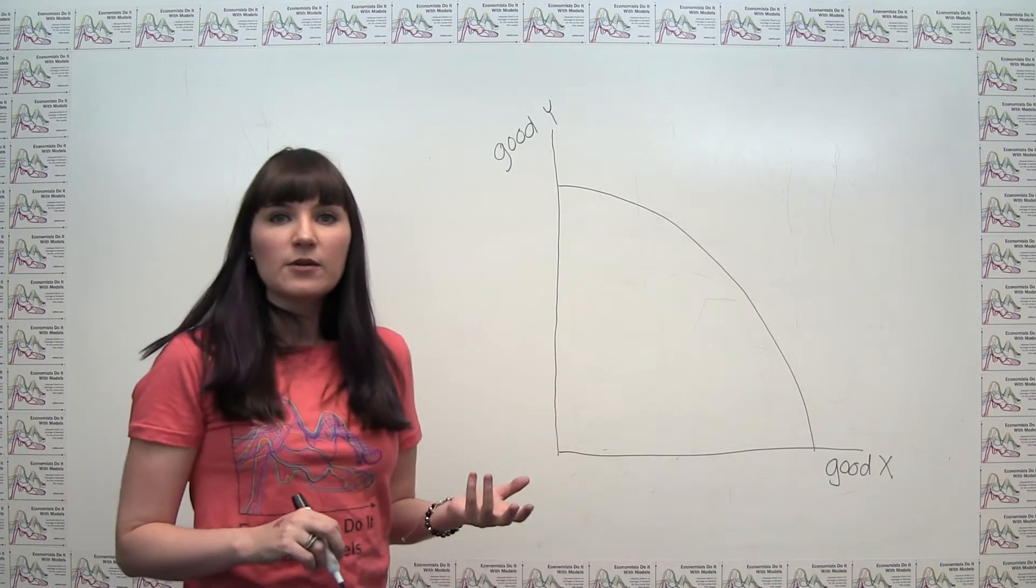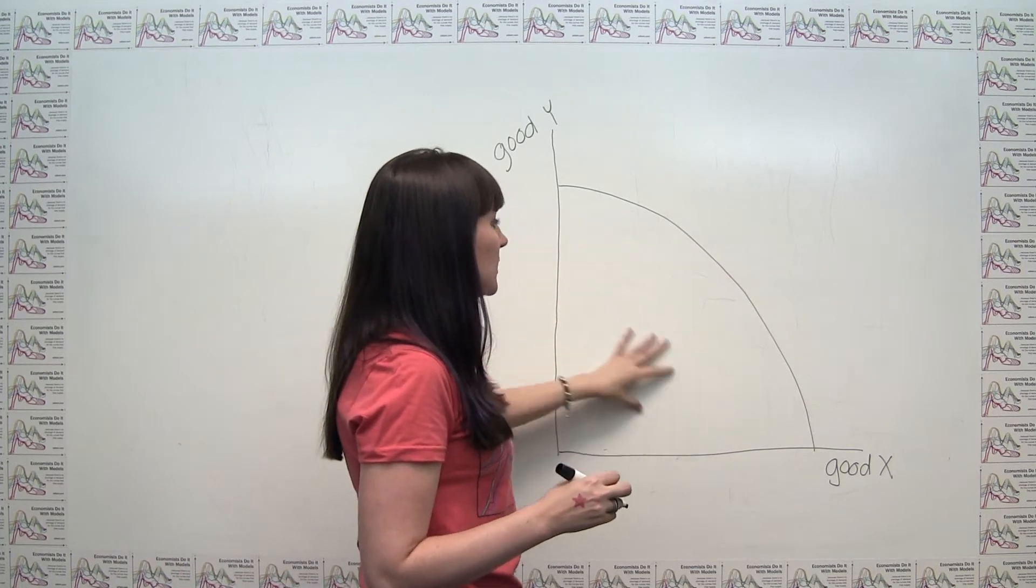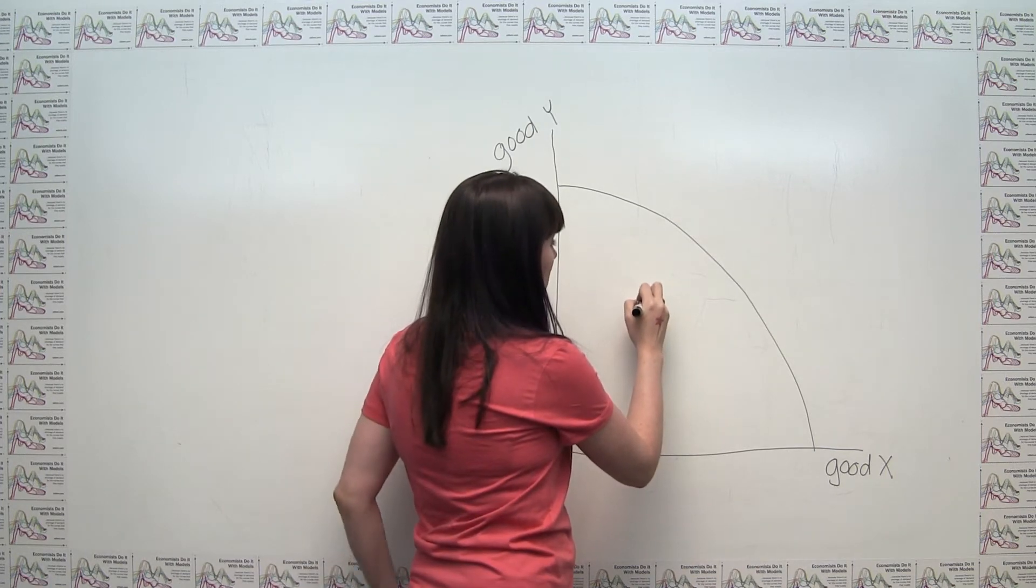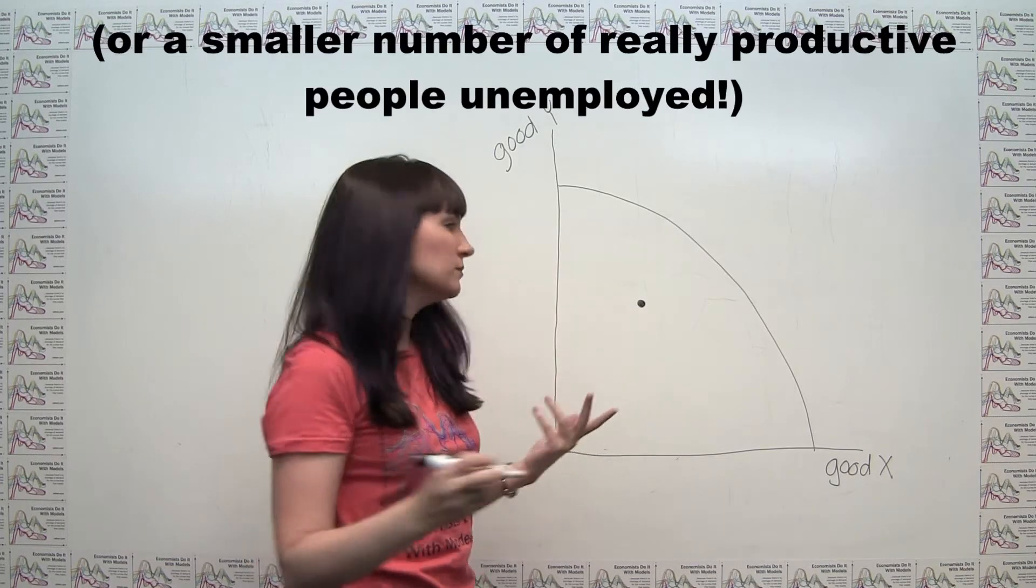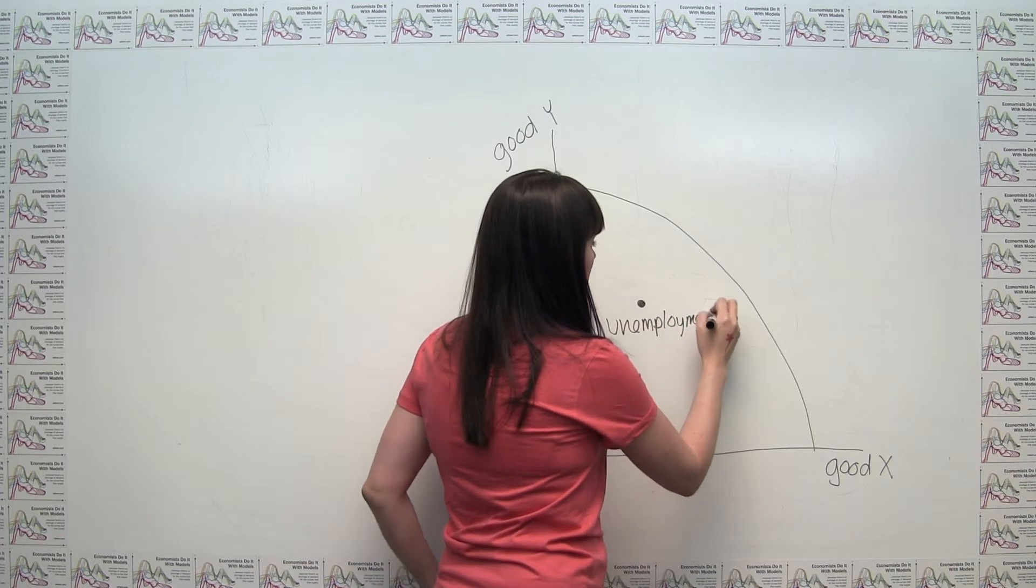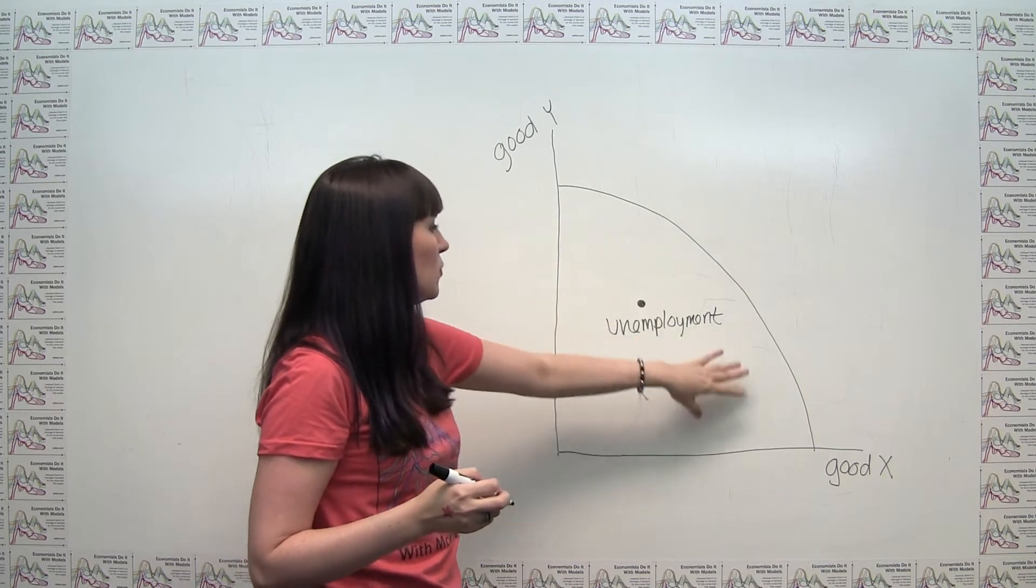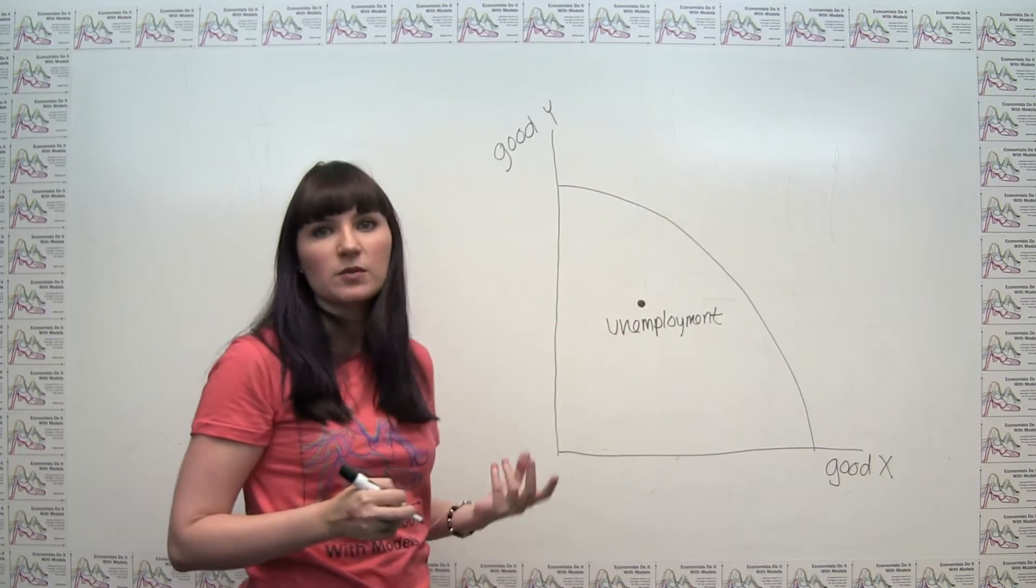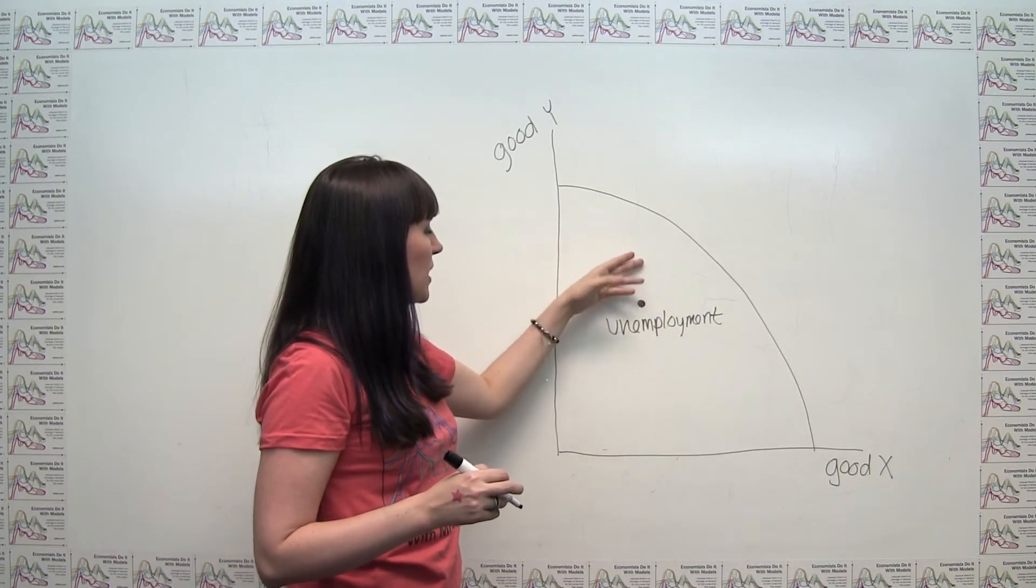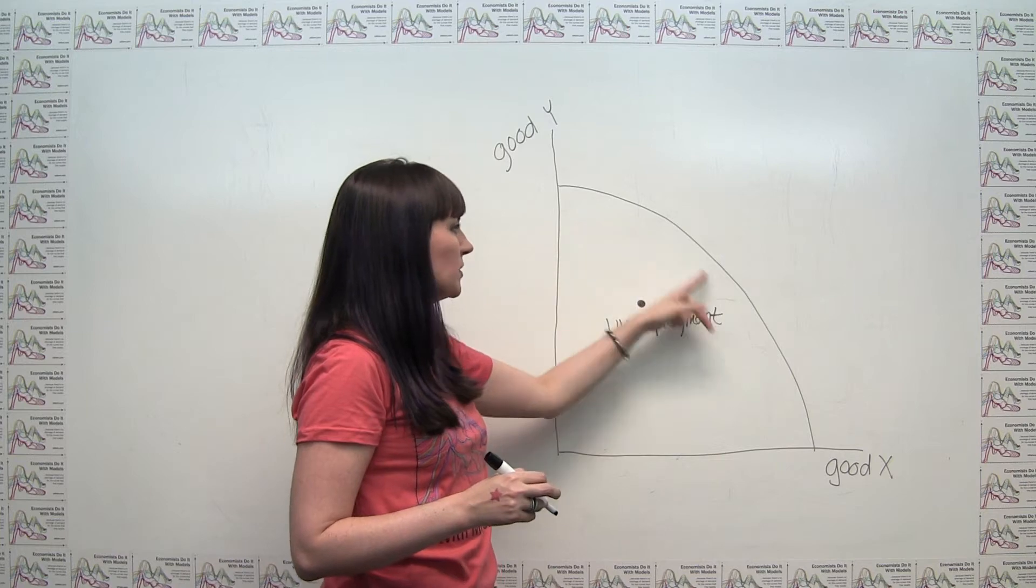What that would imply is that if we had unemployment in this economy, we would be somewhere strictly inside this production possibilities frontier. You know, maybe we'd be at a point like this. This would be a lot of unemployment, actually. But nonetheless, this would be an example of a point where we have unemployment. And in fact, unemployment could be represented by almost any point within this production possibilities frontier, because the overall point that we're trying to make is that as soon as we have resources not being used, we're not producing the maximum output that we could.